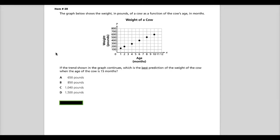Number 28 from the Spring 2014 Algebra One Tennessee test. The question says the graph below shows the weight in pounds of a cow as a function of the cow's age in months. If the trend shown in the graph continues, which is the best prediction of the weight of the cow when the age of the cow is 15 months?